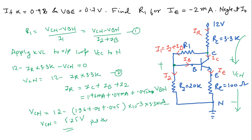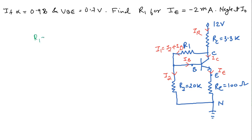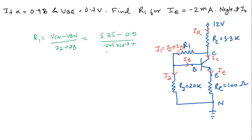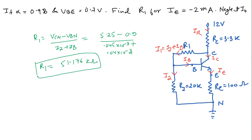Putting VCN into equation number 1: R1 equals VCN minus VBN divided by I2 plus IB, which is 5.25 minus 0.9 divided by 0.045 milliampere plus 0.04 milliampere. After solving, R1 equals 51.176 kilo ohms. This is the value of R1 obtained from the circuit.